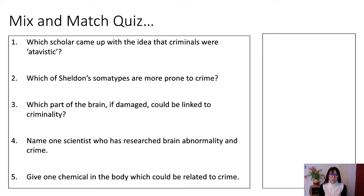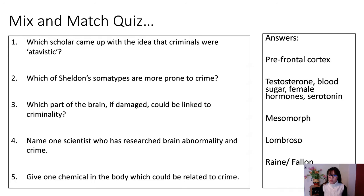Which scholar came up with the idea that criminals were atavistic? Which of Sheldon's somatypes are more prone to crime — the word for the big muscly ones? Which part of the brain, if damaged, could be linked to criminality? Name one scientist who has researched brain abnormality and crime, and give one chemical in the body which can be related to crime. Answers to choose from include: prefrontal cortex, testosterone, blood sugar, female hormone, serotonin, mesomorph, Lombroso, Raine, and Fallon.